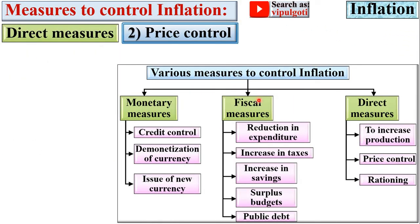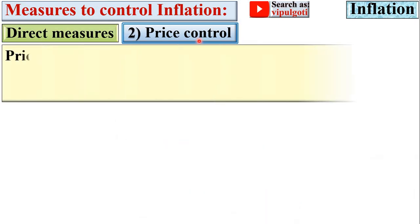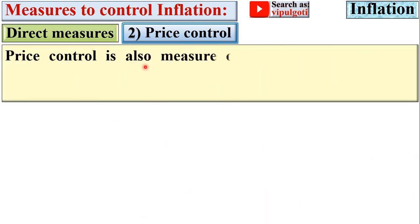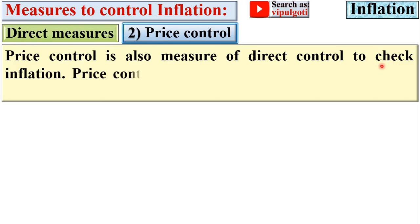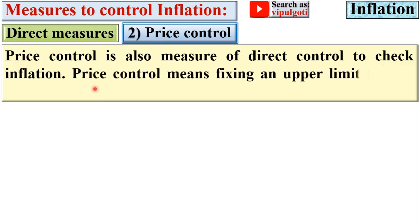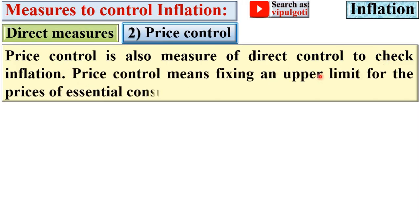Next: price control. Price control is also a direct measure to check inflation. Price control means fixing an upper limit for the prices of essential consumer goods.